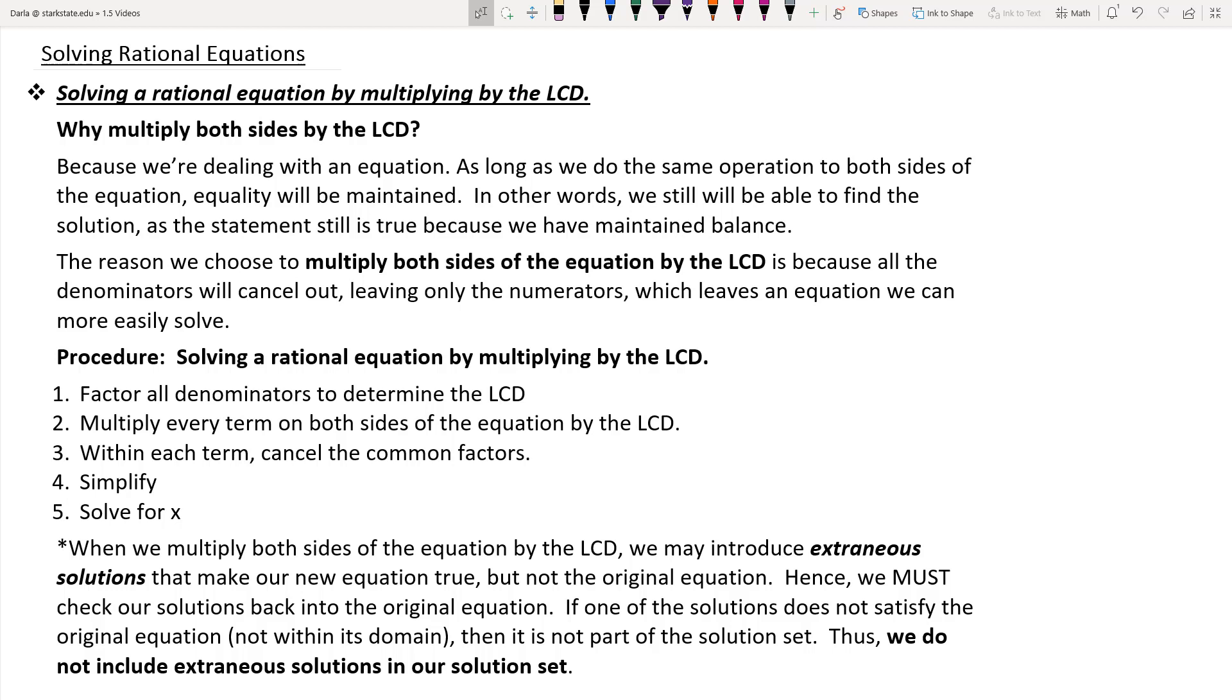Once you decide what the least common denominator is, you're going to multiply every term of the equation by that least common denominator. And then make sure you cancel out whatever is common from numerator to denominator. Cancel out those common factors, simplify as best as you can, and then solve for x.